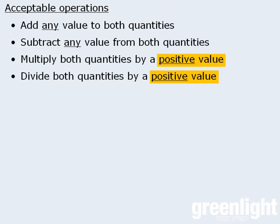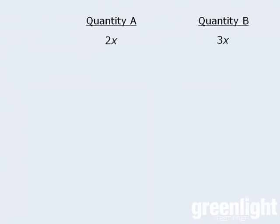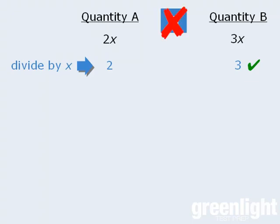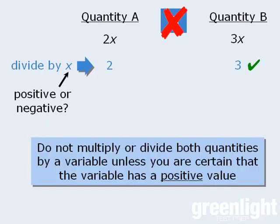This is a very important rule that often comes into play when we have questions involving variables. Since both quantities feature the variable x, it may be tempting to divide both sides by x to get the following, and then conclude that since quantity B is greater than quantity A, the correct answer is B. This however is incorrect. The problem is that when we divide both quantities by x, we cannot be certain that we're dividing by a positive value. If it turns out that we're dividing both sides by a negative value, the results will not be consistent with the original comparison. For this reason, we must not multiply or divide quantities by a variable unless we're absolutely certain that the variable has a positive value only.